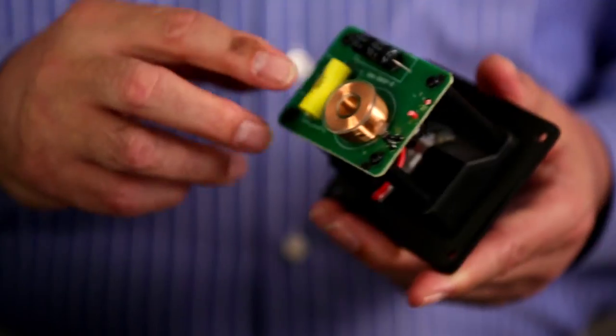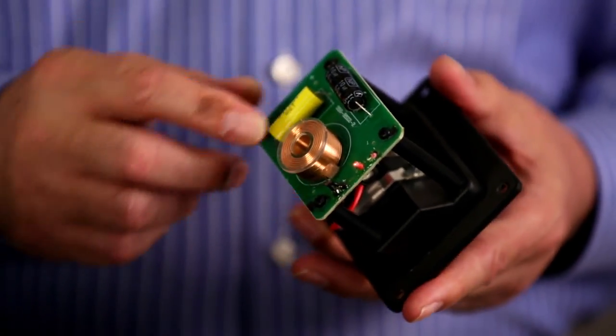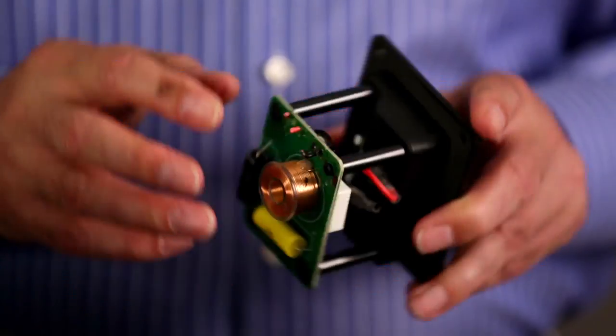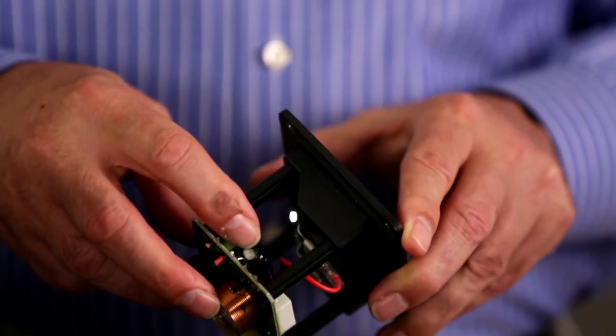They're blended together with the new crossover, still a six-element crossover, using a film cap on the tweeter and also an air core inductor. And for the bass section, we have a laminated steel core inductor and gold-plated terminals.